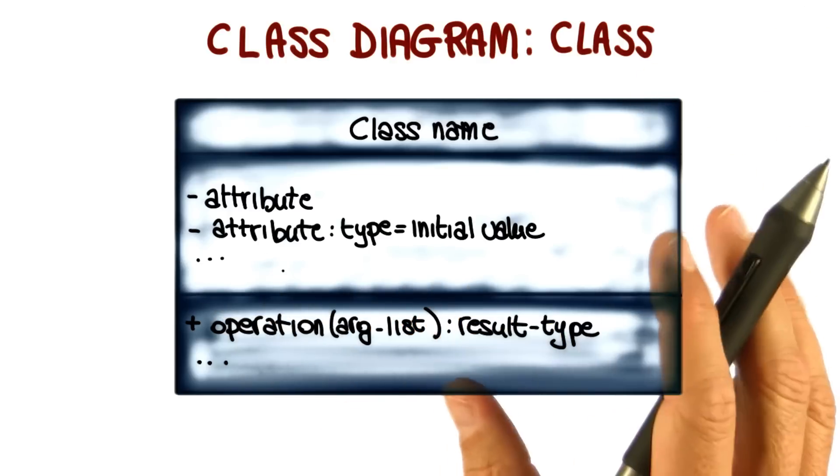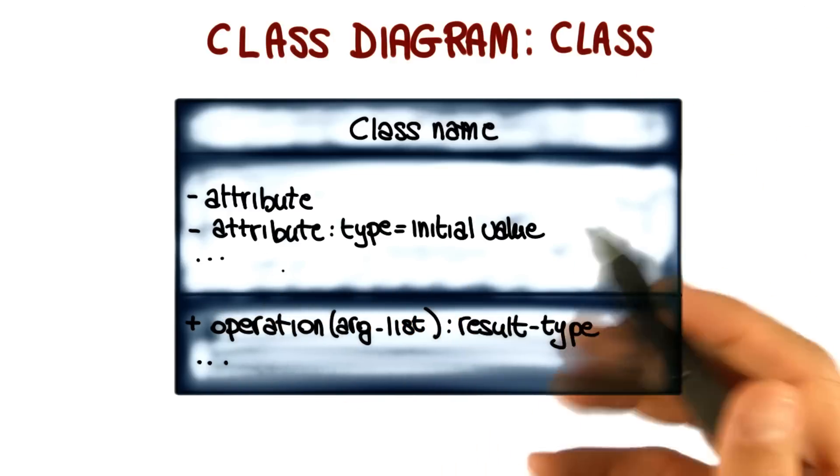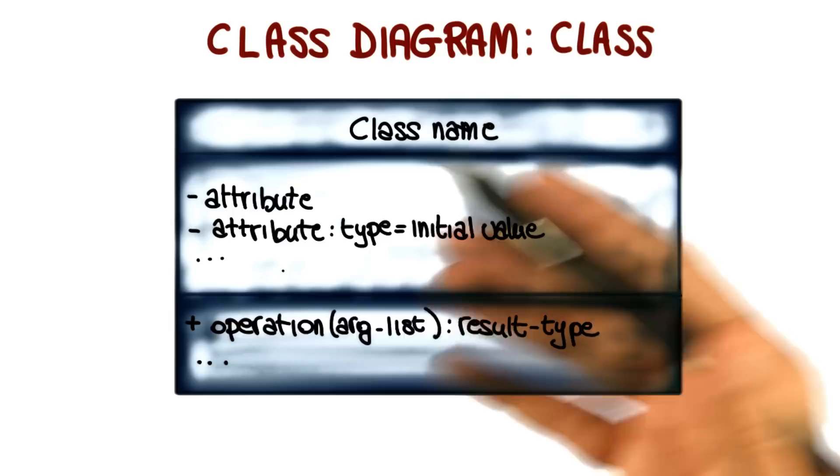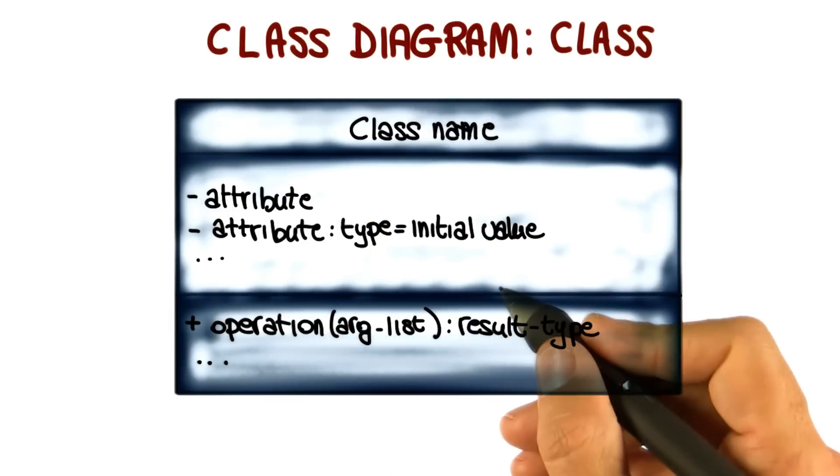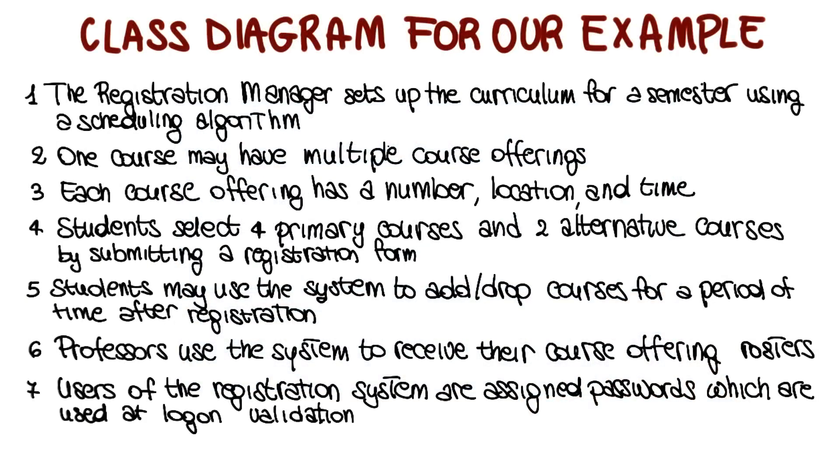Now that we know what a class is and how it's represented, let's start our analysis of the course management system by identifying the relevant classes. We need to bring back the description of our system and go through it to underline the relevant nouns in the description.